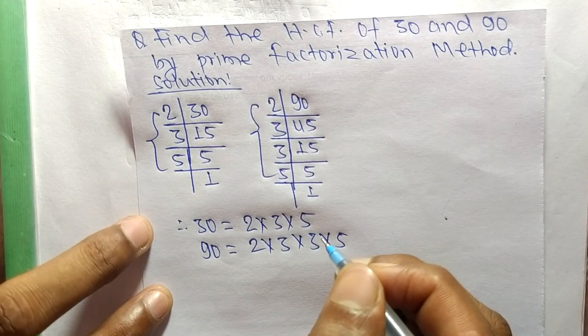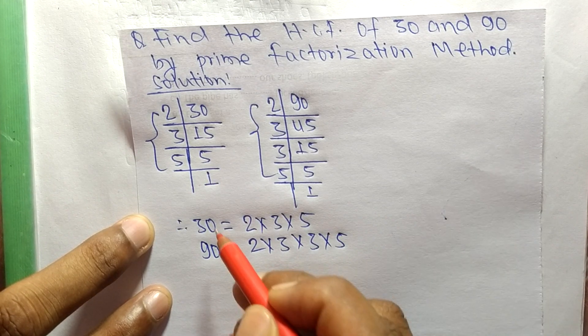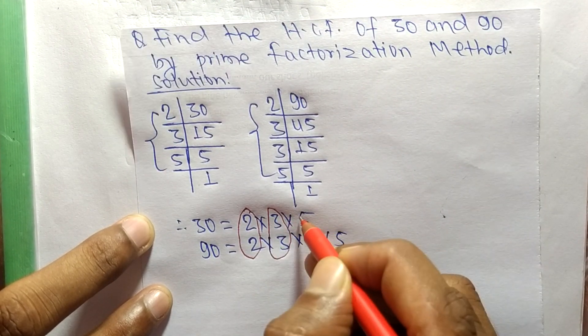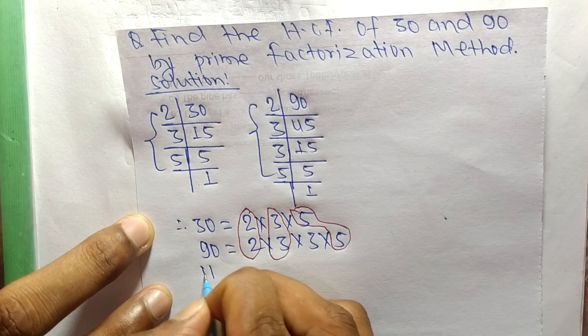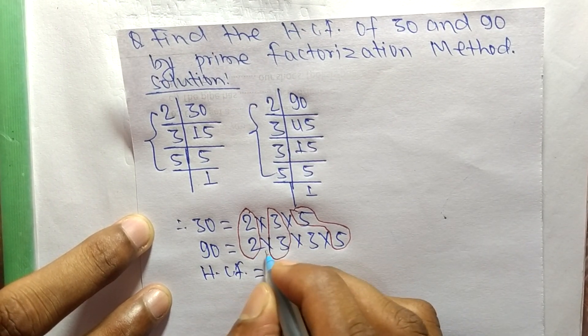Now we have to find out the common factors in these prime factorizations. The common factors are 2, 3, and 5. So the HCF is equal to the product of common factors, which is 2 times 3 times 5.